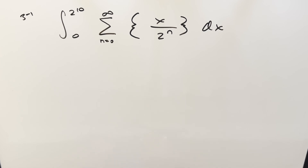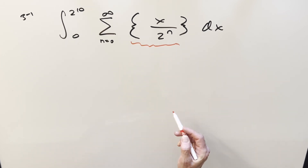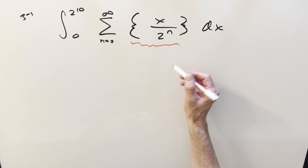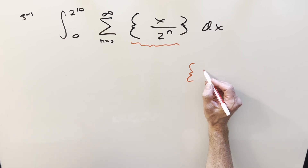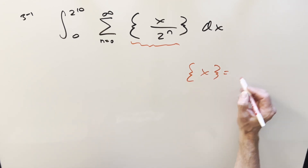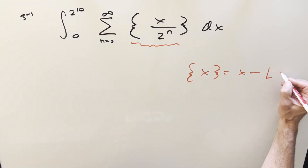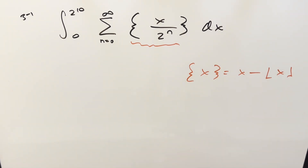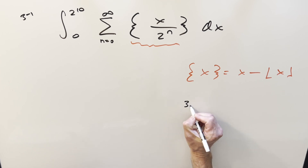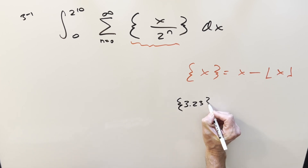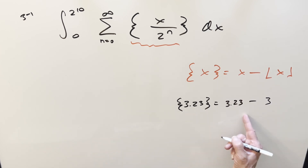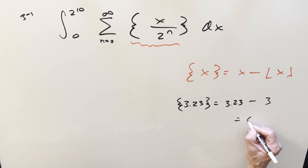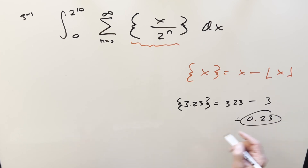There's quite a bit going on, and I think we'll just start with the fractional part. We can use the definition: the fractional part of x is the same as x minus the floor function of x. For example, if x was 3.23, the floor function rounds it down to 3, so we'd get back just 0.23 — the fractional part.